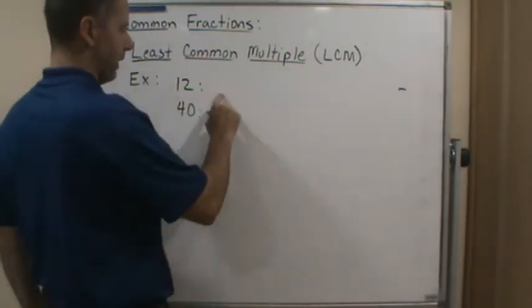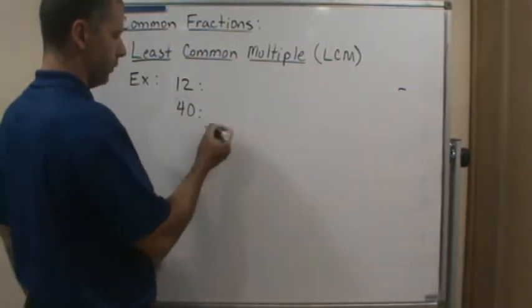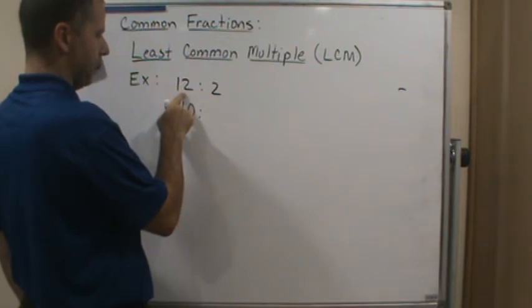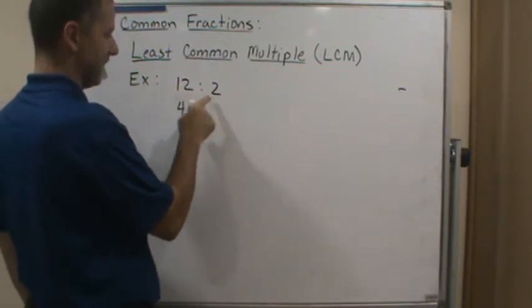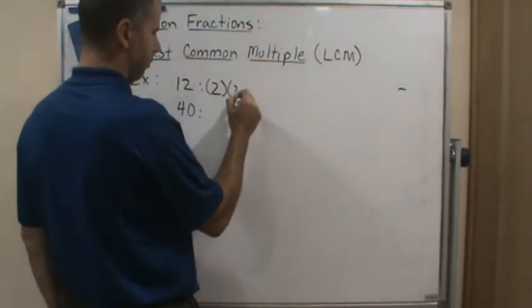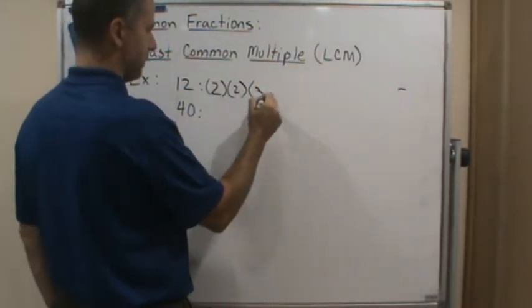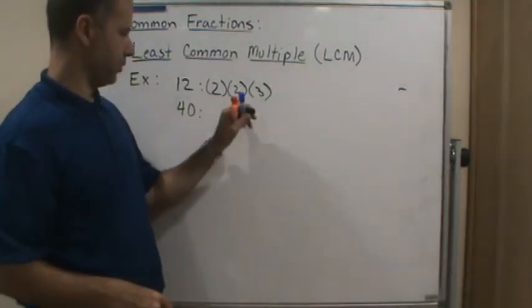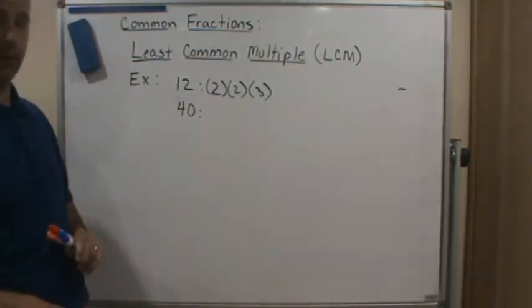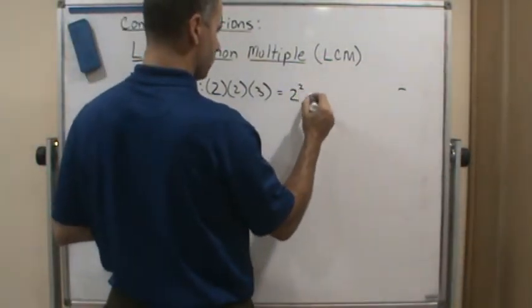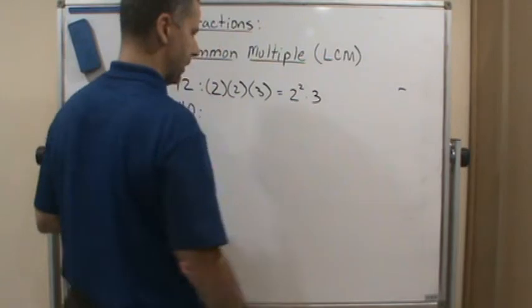So first, I'm going to write out the prime factorization of 12. That's going to be 2, and then that gives me 2 times 6, but that's going to give me another 2 times 3. If I do the factor tree, 2 times 2 is 4, times 3 is 12. So I'm going to write this in exponential form: 2 squared times 3.